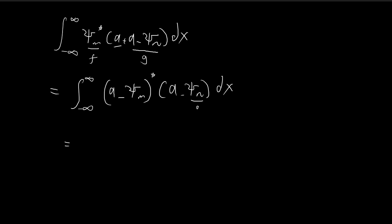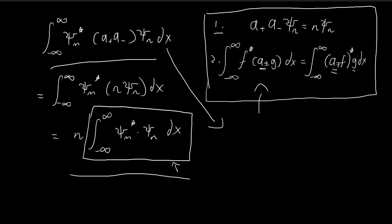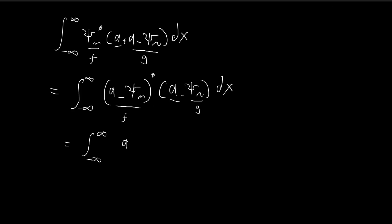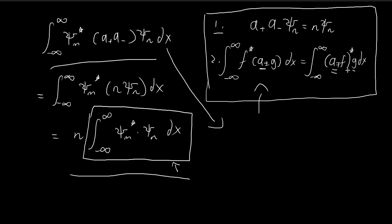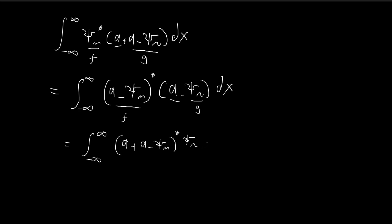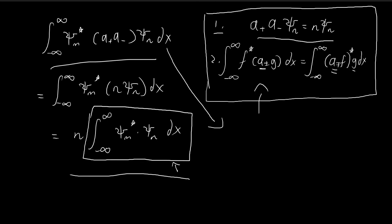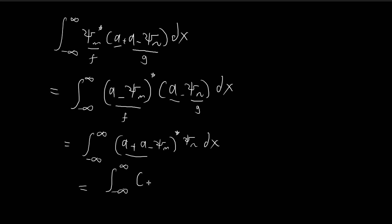Then we're going to repeat the process. This time we're going to take ξ_n as our g and a-minus ξ_m as our f, and do the exact same thing again. This time the operator is a-minus, so when this is minus, this should be a-plus. Changing from the left-hand side to the right-hand side, we have a-plus applied to f — in this case f is a-minus ξ_m conjugate — multiplied by g, which is ξ_n. This expression is exactly this expression again, so a-plus a-minus becomes m times ξ_m. In the end this becomes m times the integral from negative infinity to infinity of ξ_m conjugate times ξ_m dx.